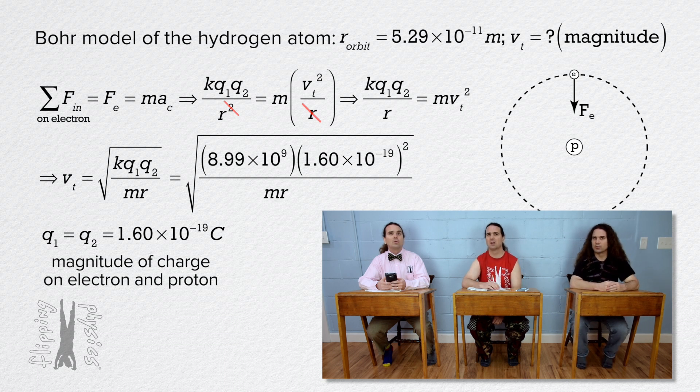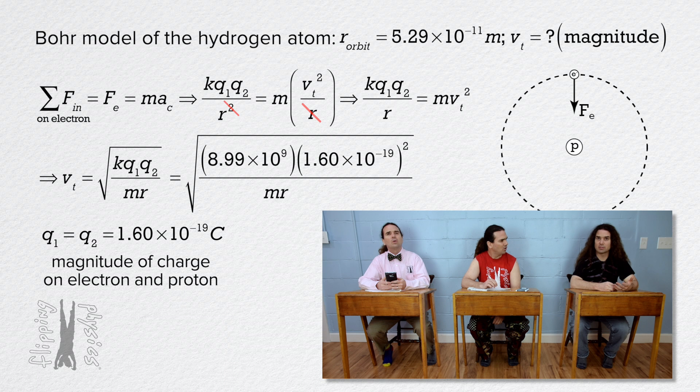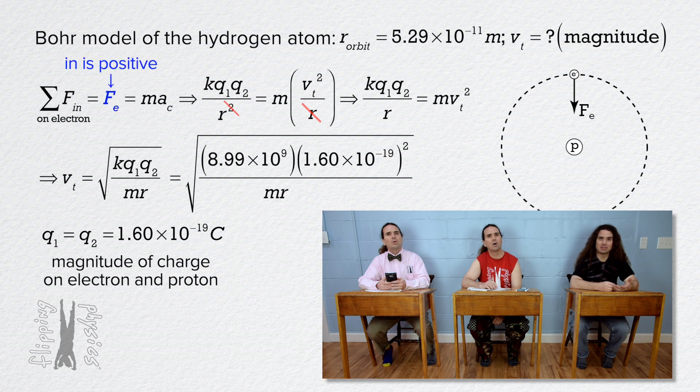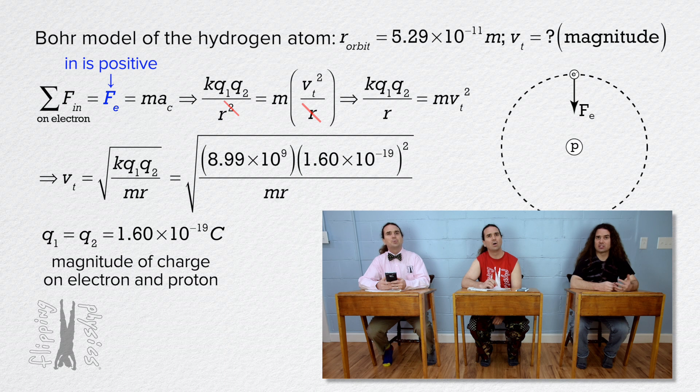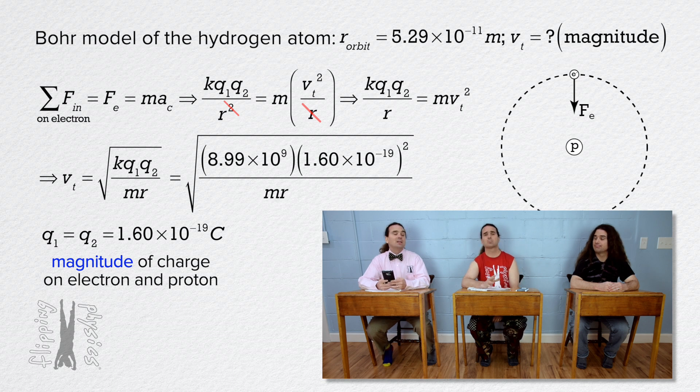Actually, when I drew the free body diagram and summed the forces in the in direction, I already defined the direction of the electric force as inward and therefore positive. Therefore, because we have already defined the direction of the electric force in the equation, we use the magnitudes of those charges. Sure, that makes sense. Thanks, Bob. You're welcome.